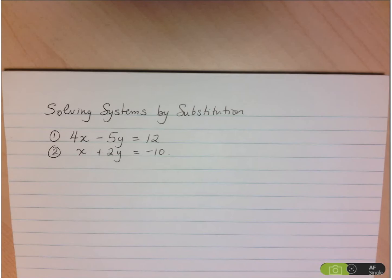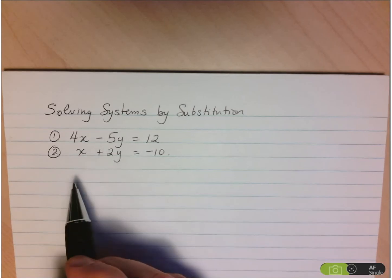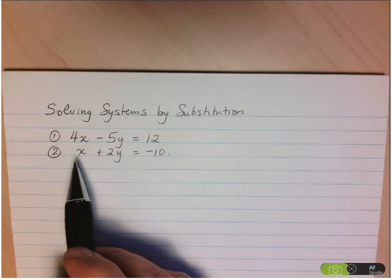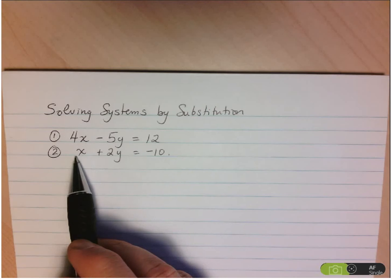So let's take a look at what we have here. First of all, we want to use substitution in particular circumstances, and what we want to look for is if there's a variable that has a coefficient of either 1 or negative 1 in it. And we see here in equation 2, x has a coefficient of 1.